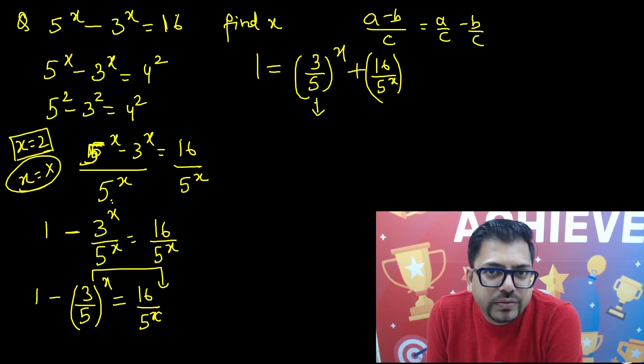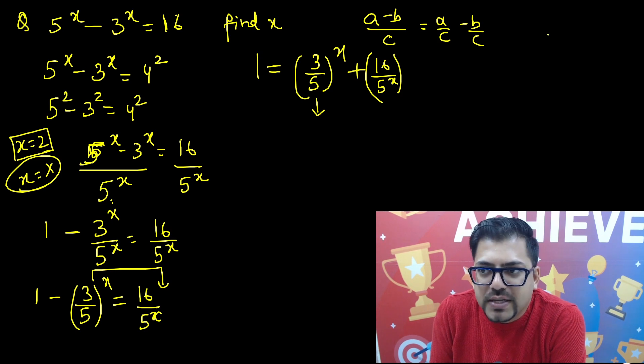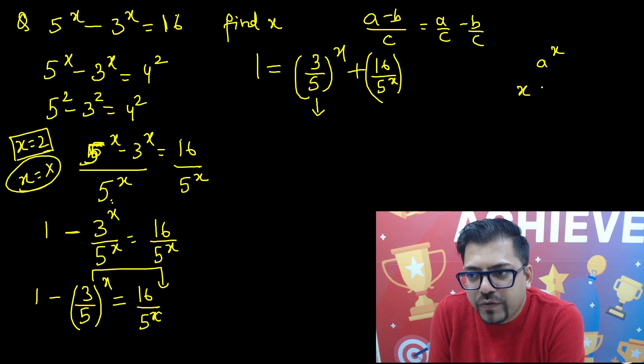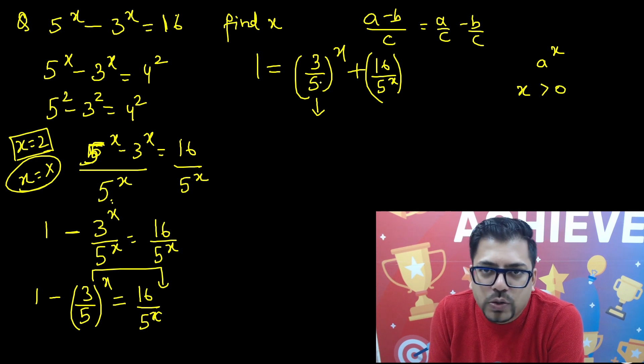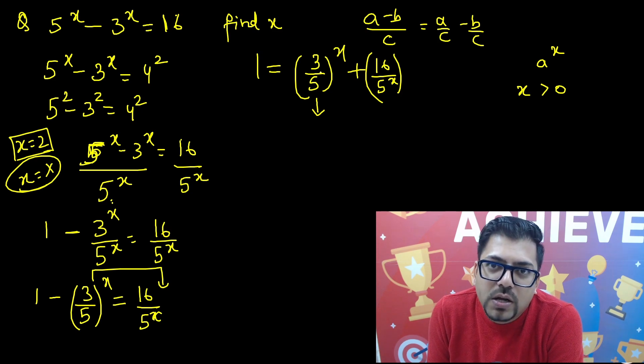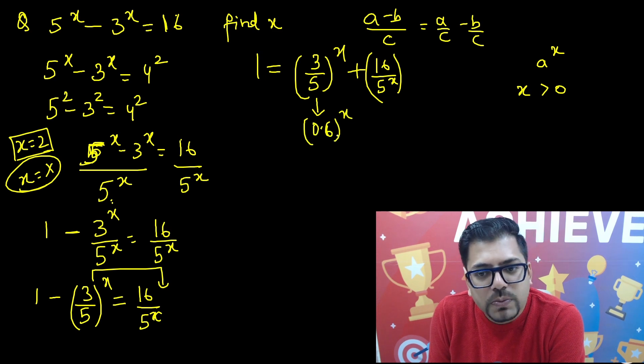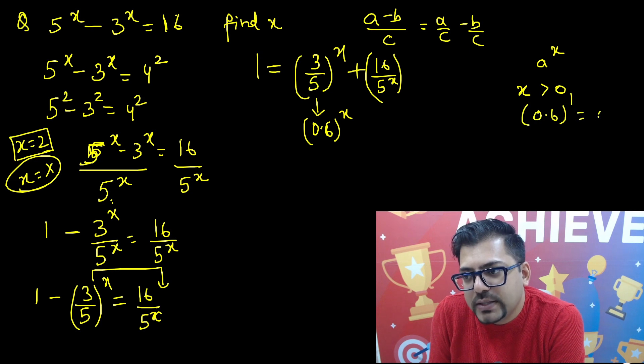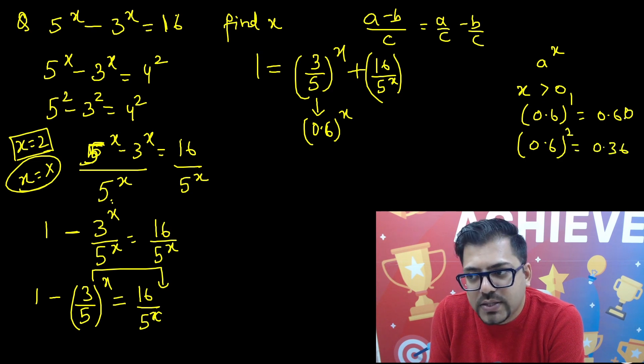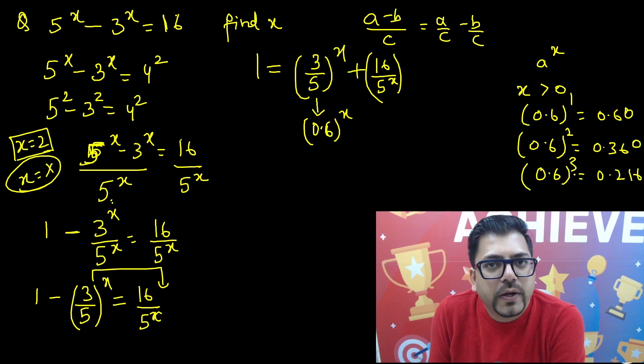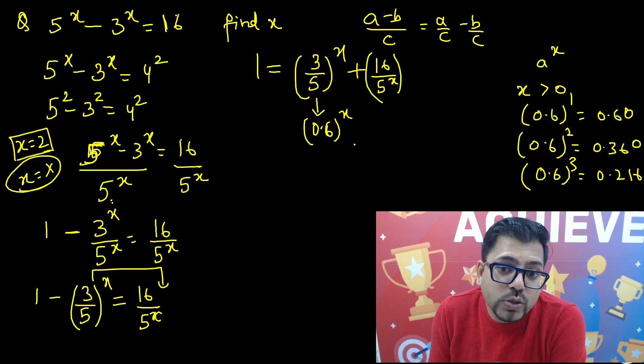This is a decreasing graph. Basically this 3/5 is a number less than 1. Any number less than 1 having a power x, when you keep on increasing x - if we go from 0, if we put x greater than 0: 1 gives 3/5, 2 gives (3/5)^2. Which is 0.6 squared equals 0.36. This is basically 0.6. So 0.6 raised to power 1 is 0.6, then 0.6^2 is 0.36. If you put 0.6 power 3, it will be 0.216. So it will keep on decreasing. This is a decreasing graph for sure.